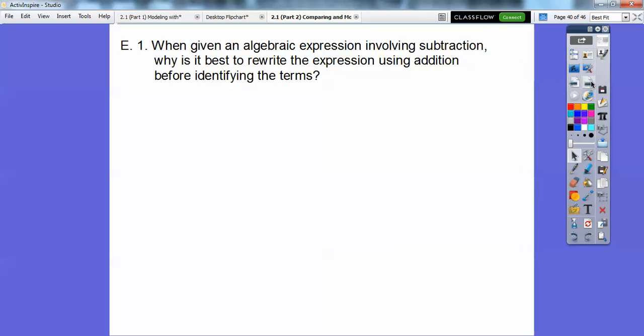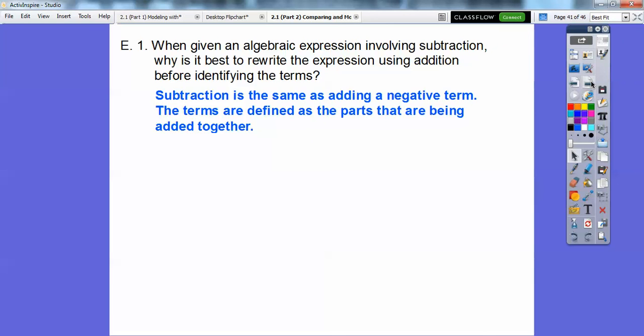When given an algebraic expression involving subtraction, why is it best to rewrite the expression using addition before identifying the terms? Well, the terms, when we started the last lesson, terms are the things that are separated by addition signs. So subtraction is the same as addition as adding the negative terms. So the terms are defined as the parts that are being added together. So when you have a subtraction, it's easier to do adding the opposite and then whatever those numbers are that we're adding, those are the terms.